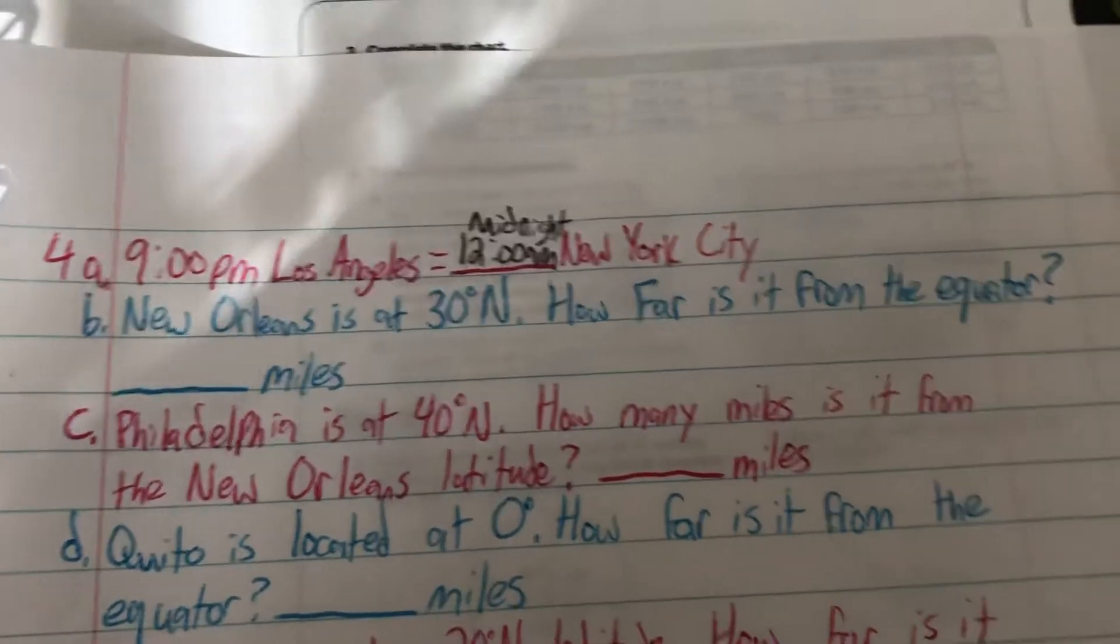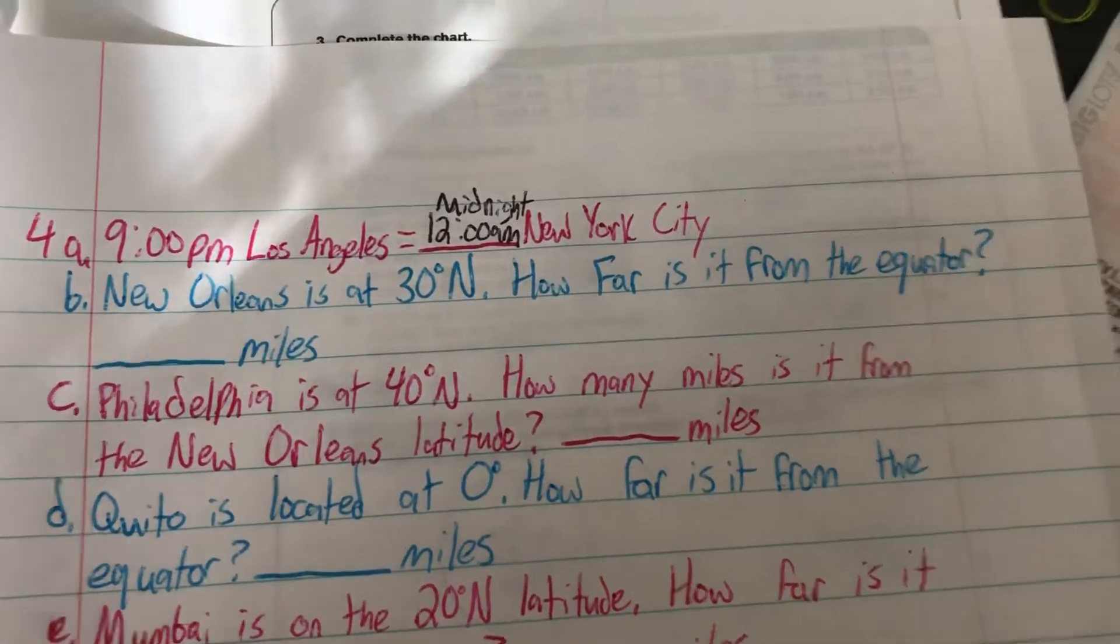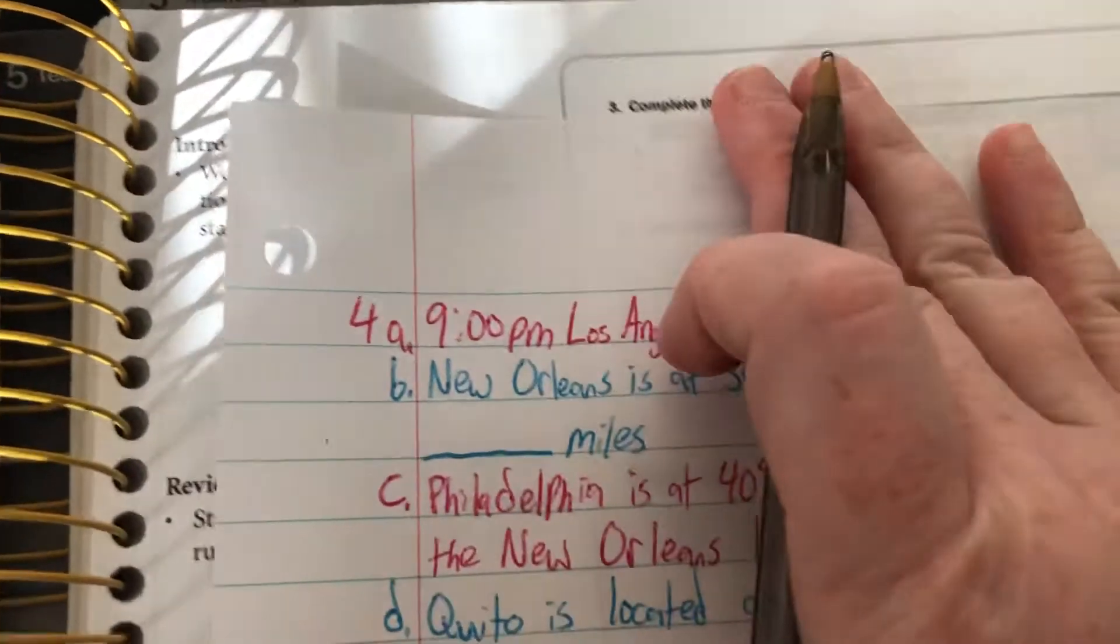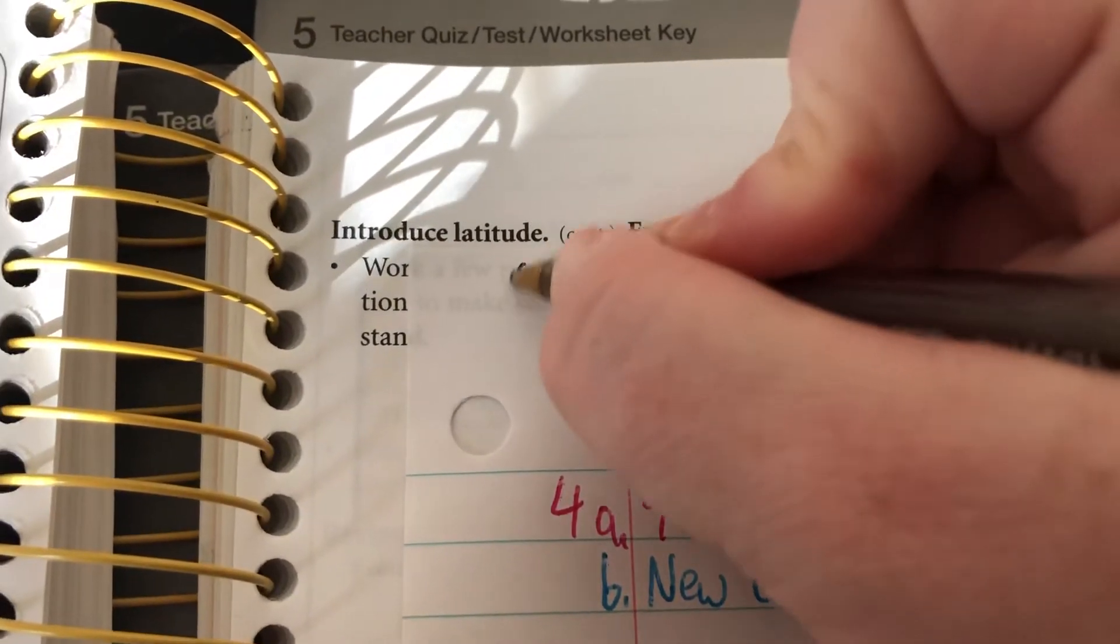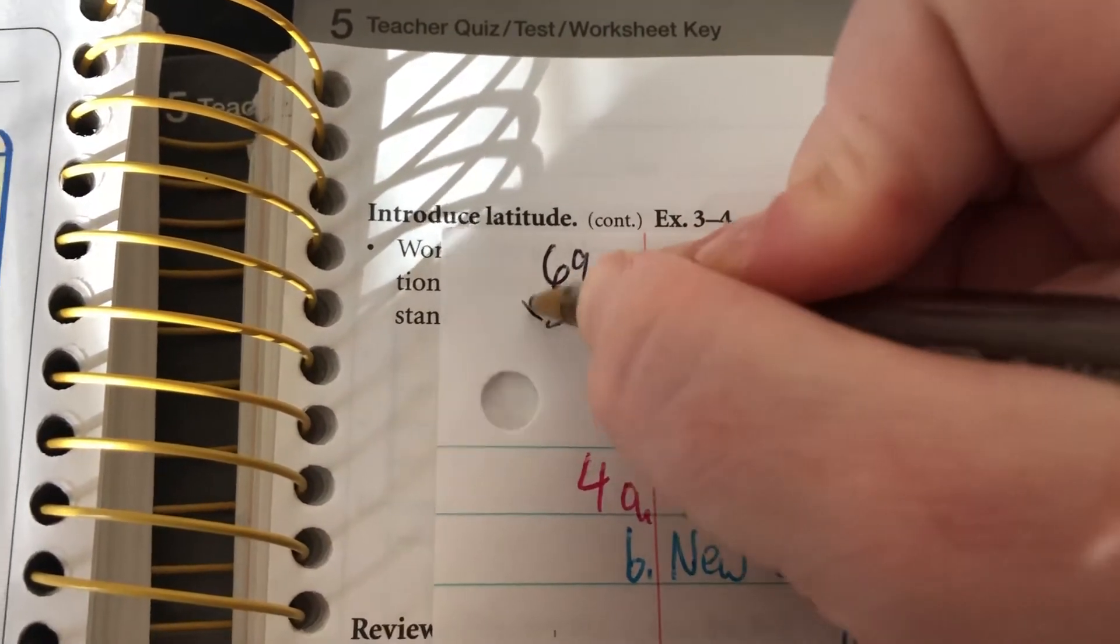It is very important to remember that noon is 12 p.m. and midnight is 12 a.m. For B, New Orleans is at 30 degrees north. How far is it from the equator? That's what we did earlier. So 30 degrees times 69 miles.